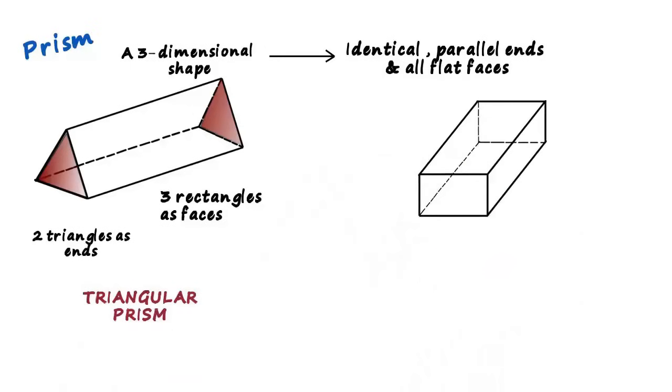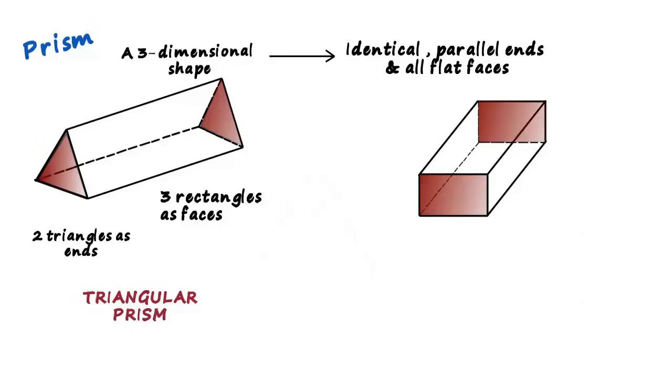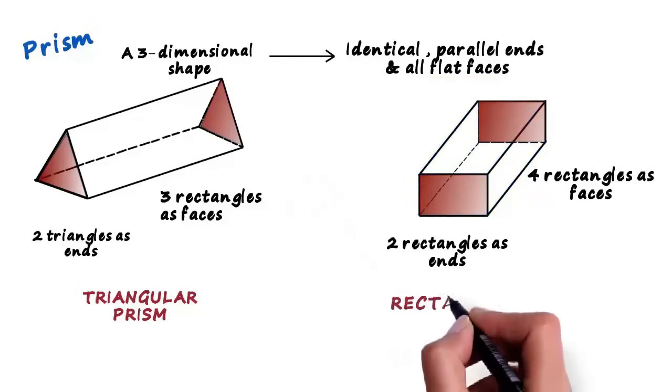Here's another three-dimensional shape. Let me color its ends. We can see that it has two rectangles as ends and they are also parallel to each other. And it has four rectangles as faces: one on the right-hand side, one on the left-hand side, one at the top and one at the bottom. So all its faces are flat. This is called a rectangular prism.